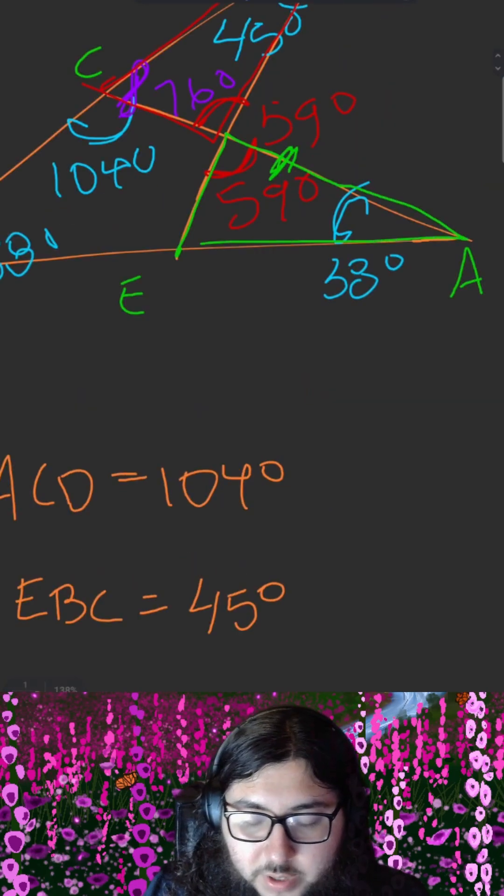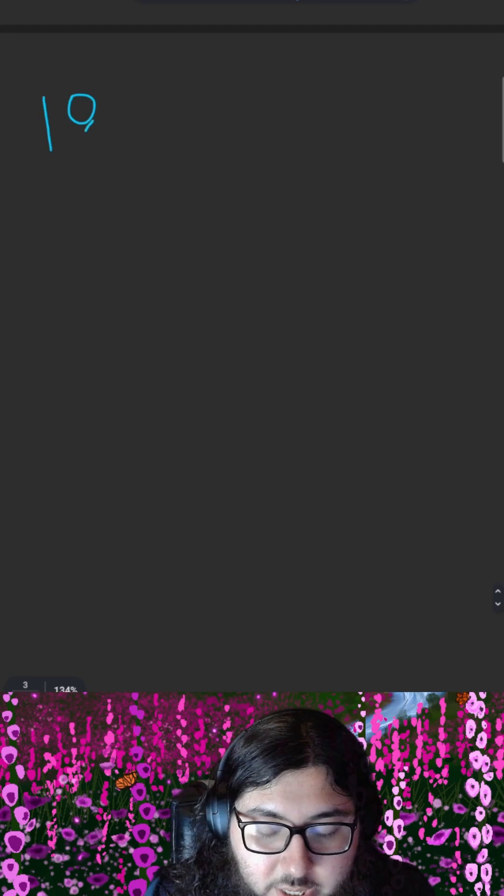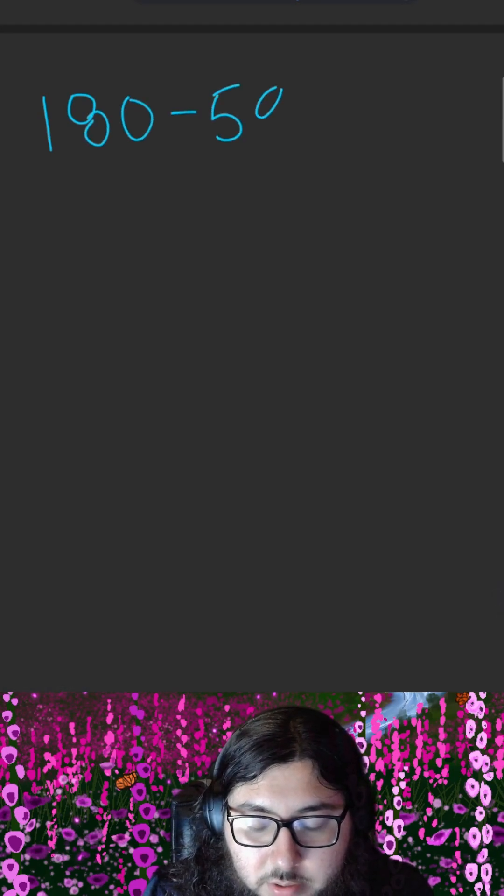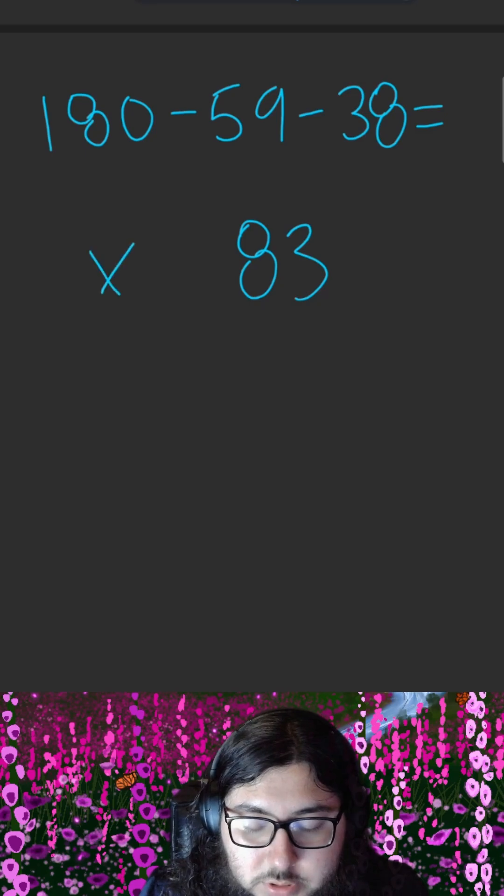We have two of the three angles in this triangle highlighted in green. Therefore, we can do something similar as we've done before to calculate the final angle, which is x. 180 minus 59 minus 38 yields 83, which is equal to x.